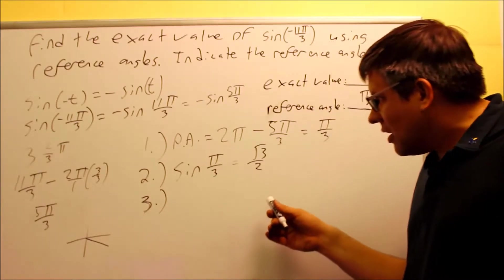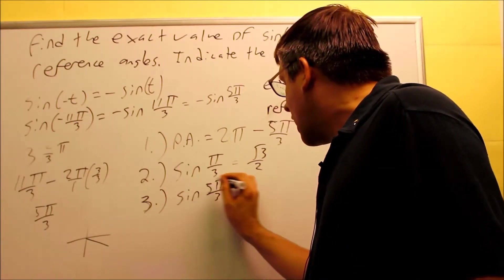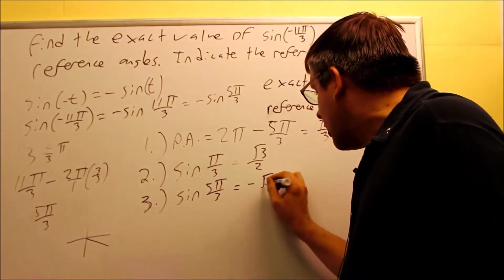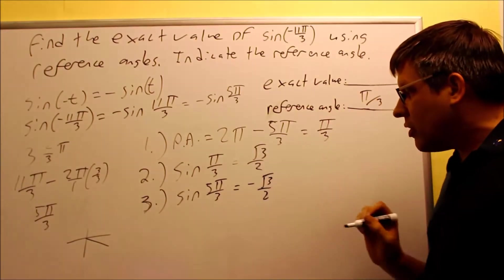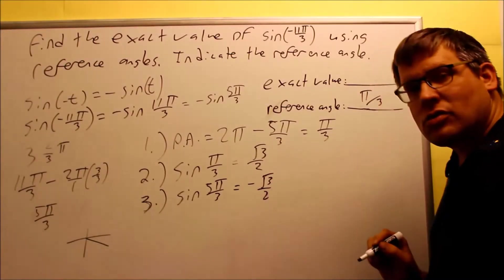That means that if I want to do sine of 5π over 3, that's got to have a negative value. So I'm going to take the same number I got previously and apply a negative sign to it. So that's negative root 3 over 2.